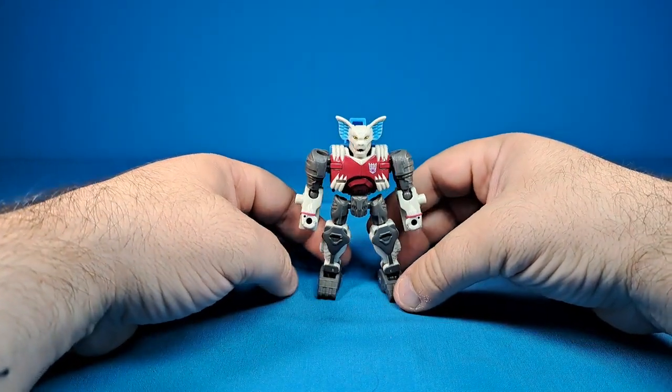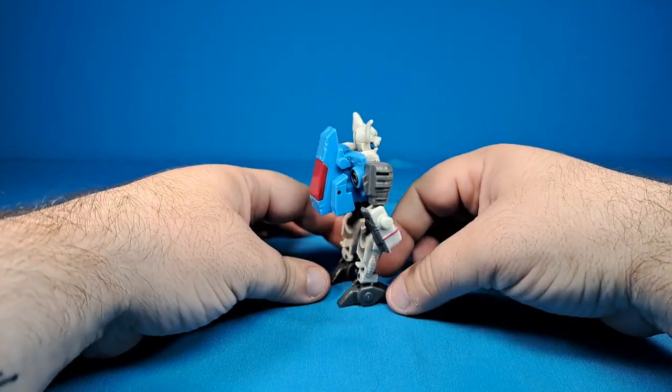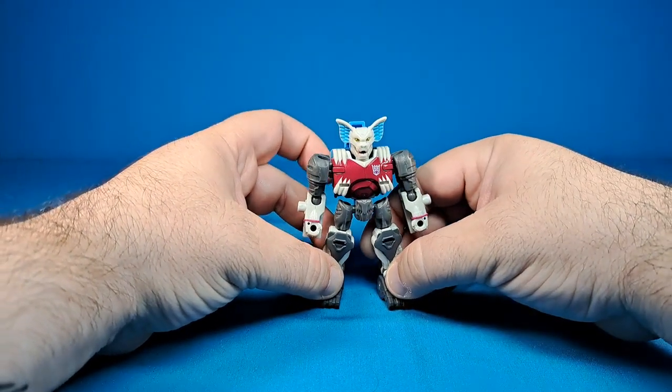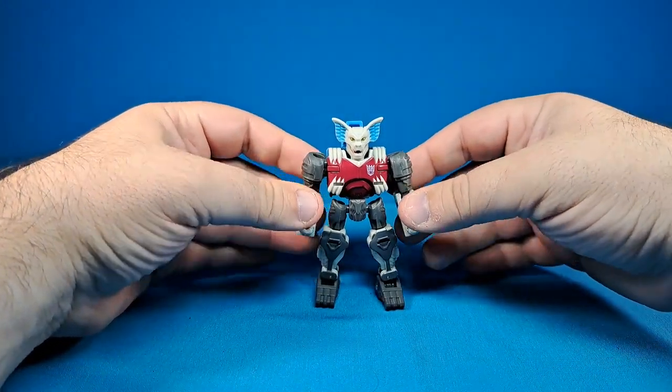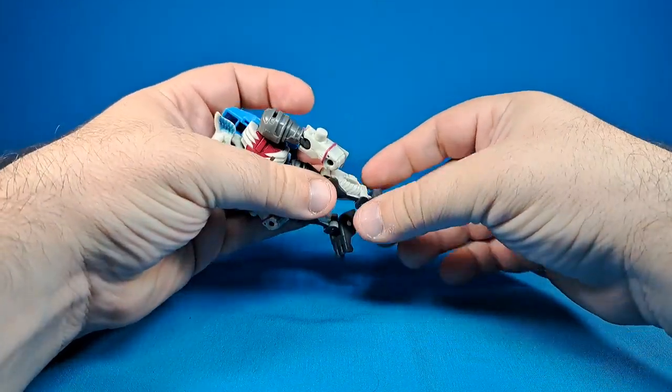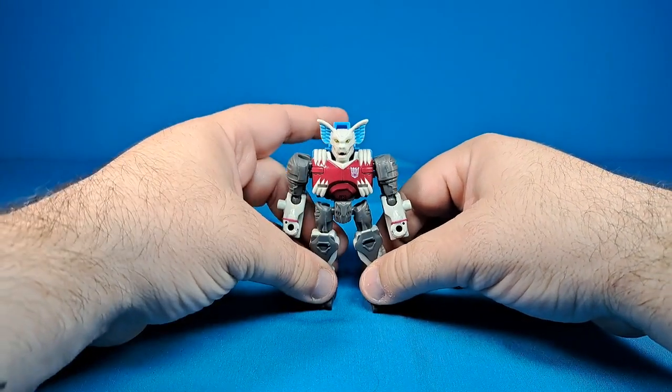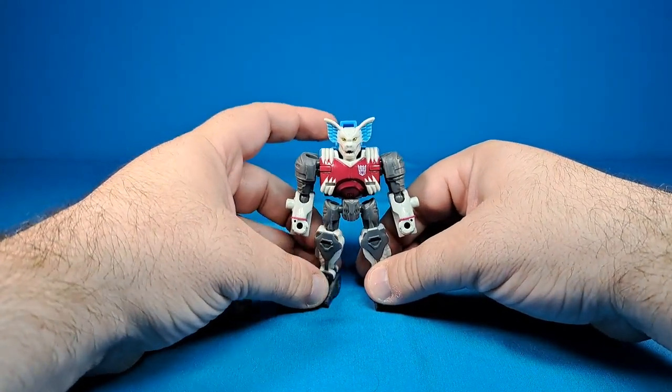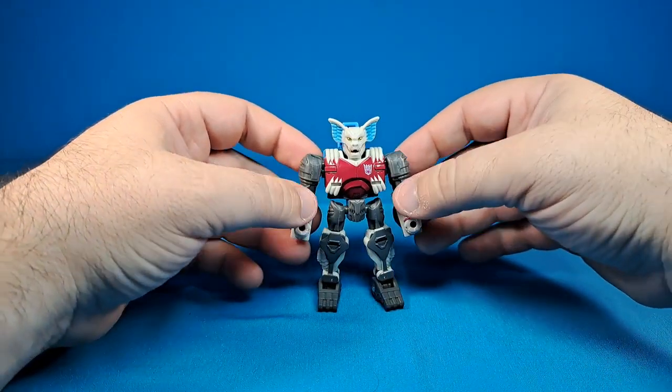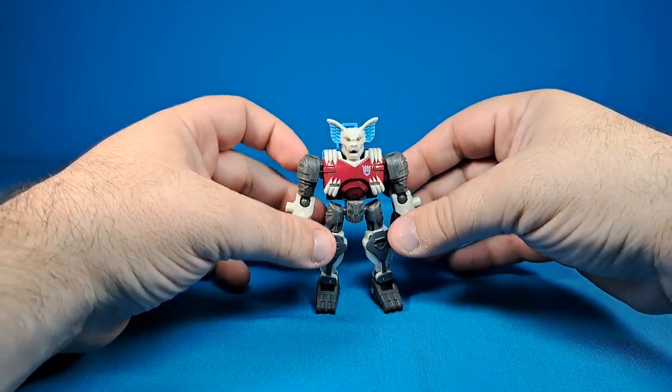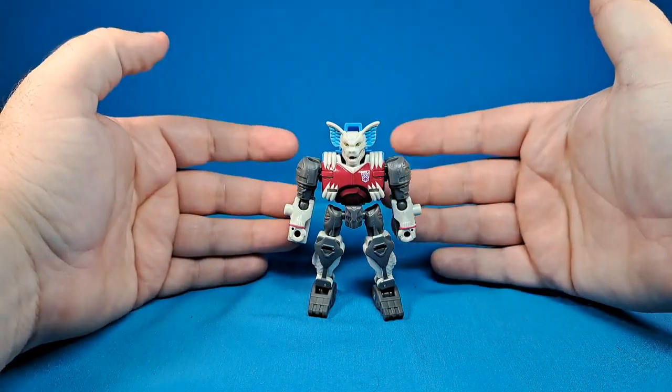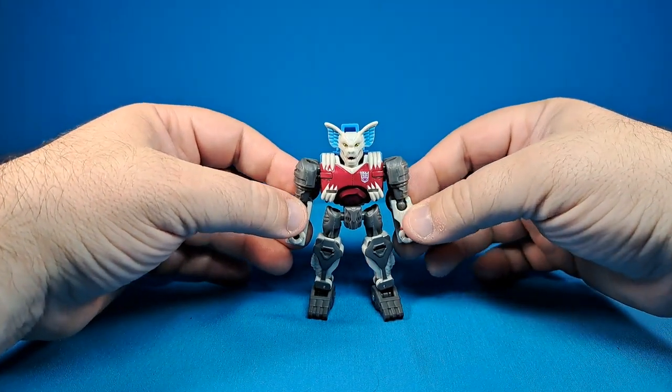This is the next in their line of doing all of the Pretenders, but not exactly being real consistent about the size of the Pretenders or whether they're doing Pretender cores, the actual robots, or the Pretender shells. This one is the Pretender shell, I guess. Nobody cares about the Pretender cores unless it's Metal Hawk.